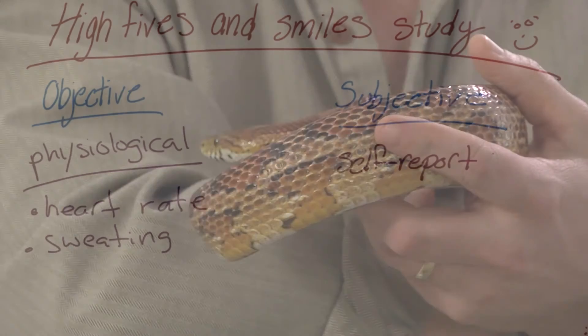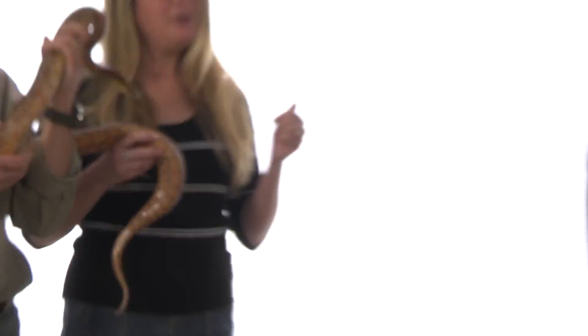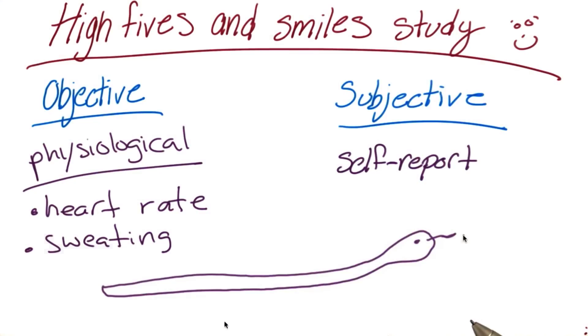Think back to Lauren's reaction to Tickles the snake. We could use different psychological measures to assess her response. We can use an objective measure, meaning we could watch her run away. We could also look at her nervous laughter, and that would be an objective measure.